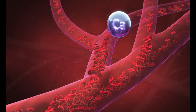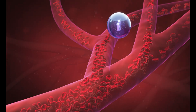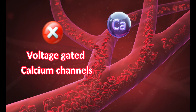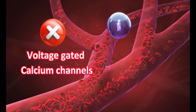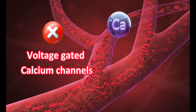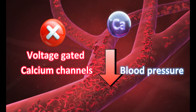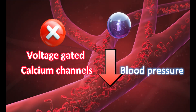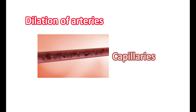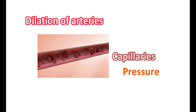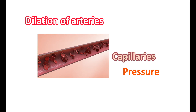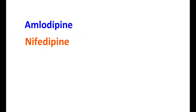Calcium is required for the contraction of blood vessels. The entry of calcium into blood vessels is mediated through voltage-gated calcium channels. CCBs block these ion channels and prevent the entry of calcium, resulting in the relaxation of arterial smooth muscle and dilation of blood vessels, producing a drop in blood pressure. Due to dilation of arteries, a larger amount of blood reaches the capillaries, increasing capillary pressure and resulting in fluid leakage into the tissues. Therefore, CCBs with direct action on arteries have a pronounced effect on inducing edema. Swelling of the ankles and foot is common with these medications.